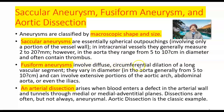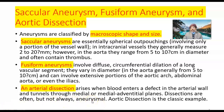A fusiform aneurysm involves diffuse circumferential dilation of a long vascular segment. They vary in diameter in the aorta, generally from 5 to 10 cm, and can involve extensive portions of the aortic arch, abdominal aorta, or even the iliac arteries. An arterial dissection arises when blood enters a defect in the arterial wall — mostly seen in the aorta, including the ascending aorta, arch of aorta, descending thoracic aorta, or abdominal aorta — and tunnels through the medial or medial-adventitial plane. Dissections are often but not always aneurysmal.